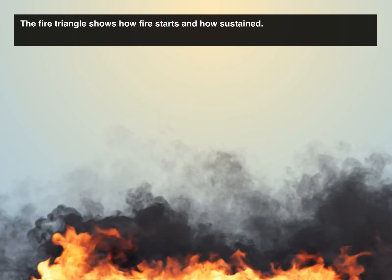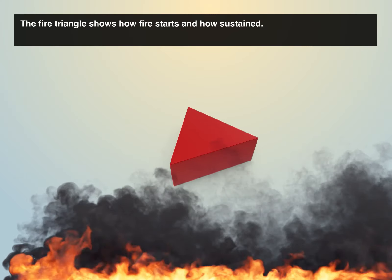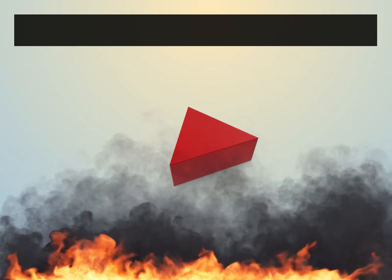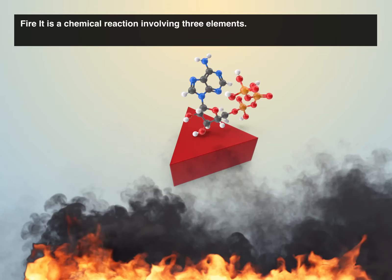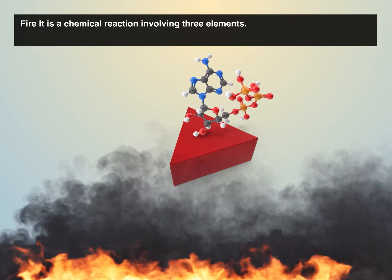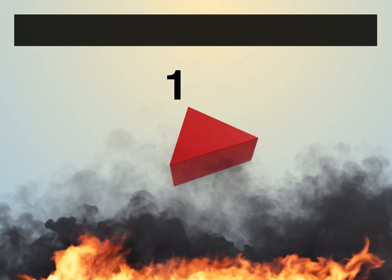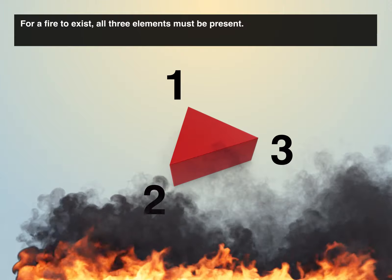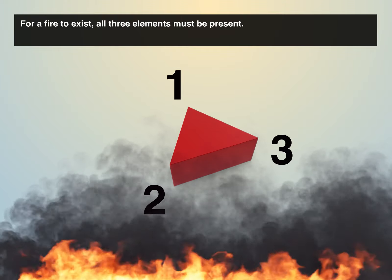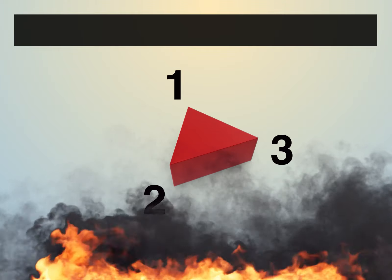The fire triangle shows how fires start and are sustained. Fire is a chemical reaction involving three elements. For a fire to exist, all three elements must be present.